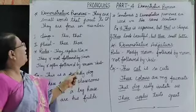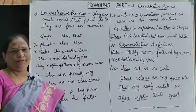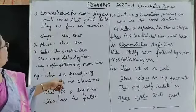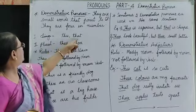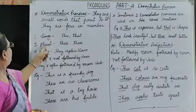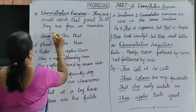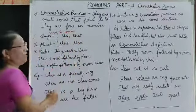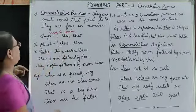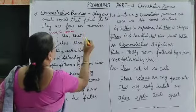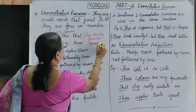Demonstrative pronouns are small words that point to something. They also act as subject and object. They are four in number. This and that are singular; these and those are plural. This and these show things near to the speaker, whereas that and those show things far away from the speaker.